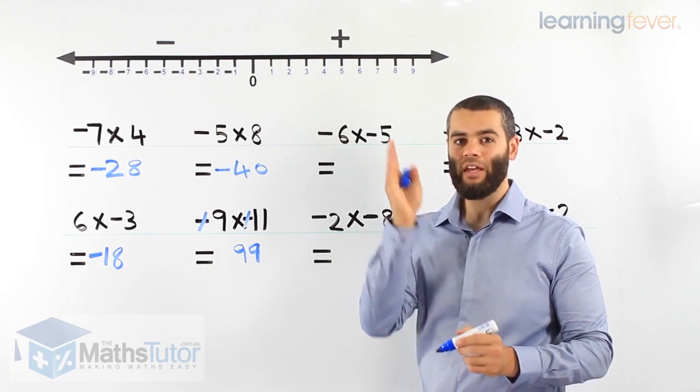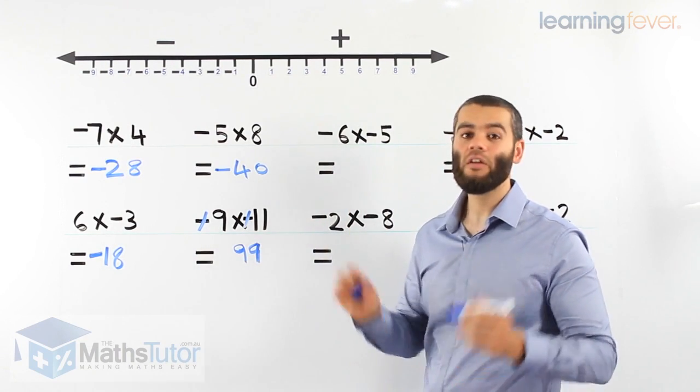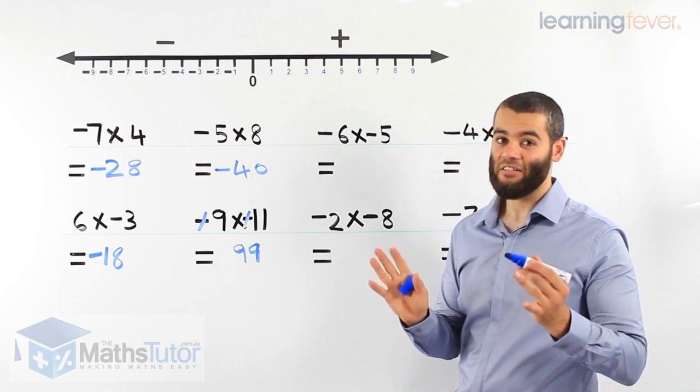So when we have two negatives, they cancel each other out and they basically go. 9 times 11, 99, positive 99. That's how easy it is.